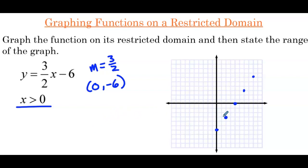We only want to plot points on the line where the x value is greater than 0, so that's only to the right of the y-intercept — x equals 1, x equals 2, x equals 3. We do have to deal with the fact that x is greater than 0, not greater than or equal to 0. The way we'll handle that is similar to graphing a solution set on the number line: we're going to make that point at the y-intercept an open circle to indicate we're not equal to 0, but only greater than 0.